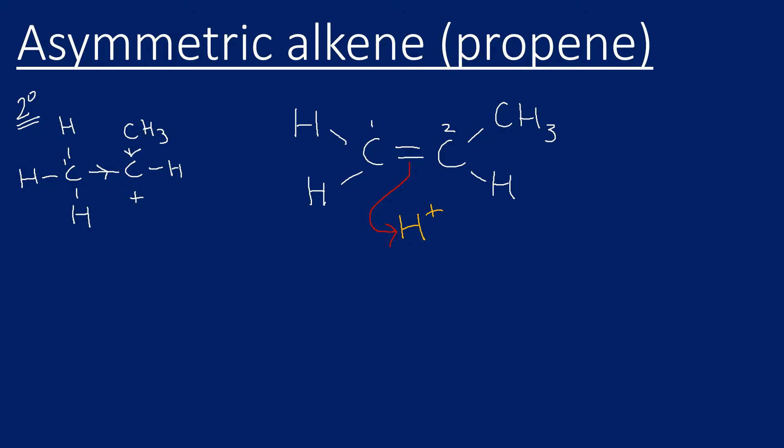The second option is that the hydrogen is bonded to carbon number two, and carbon number one is our carbocation. This time around, this is a primary carbocation. The secondary carbocation is more stable, so that means our major product would be this one on the left-hand side.